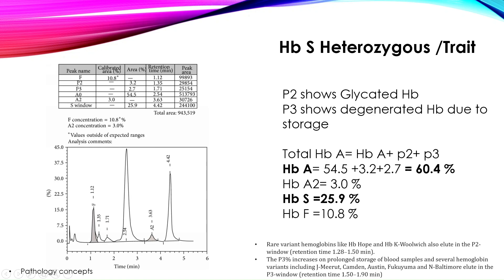Now let's see HbS heterozygous, or sickle cell trait. Here an additional peak is observed in the S window at retention time 4.42. HbA is around 60%, HbA2 is 3%, HbS is 25.9%, and HbF is 10.8%. In sickle cell trait, the percentage of hemoglobin S is between 20 to 30%.